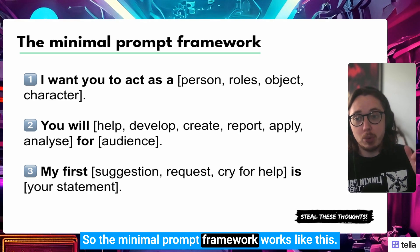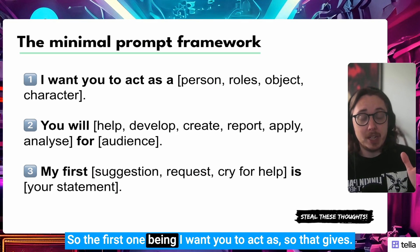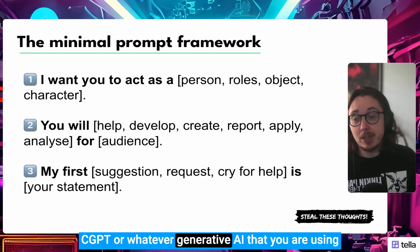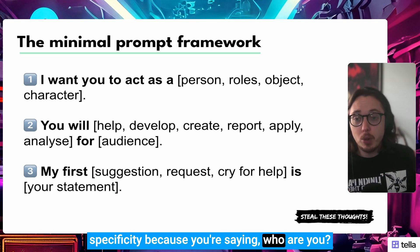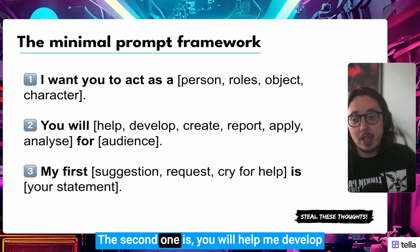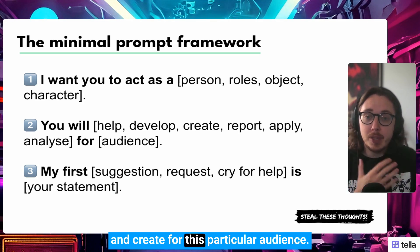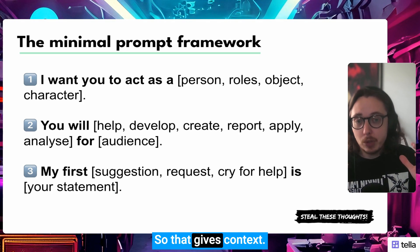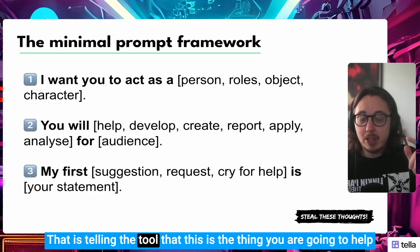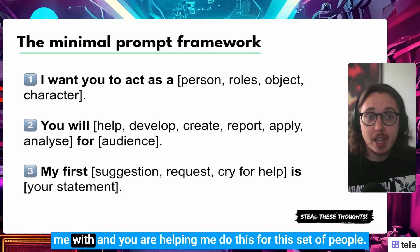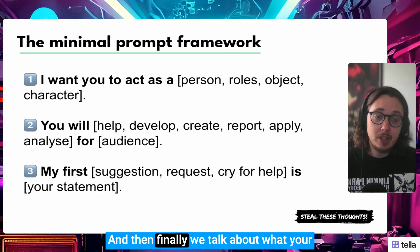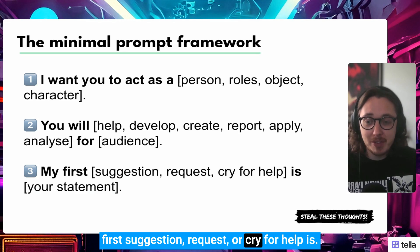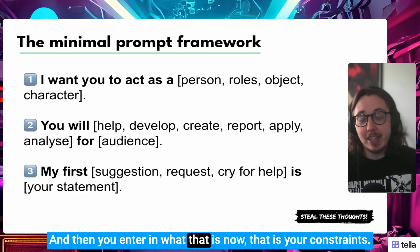The minimal prompt framework works like this — we're going to use three sentences. The first one is: 'I want you to act as...' That gives GPT, or whatever generative AI you're using, specificity — you're saying who they are and what they're doing. The second sentence is: 'You will help me develop or create for this particular audience.' That gives context — it tells the tool what you're going to work on and who it's for.